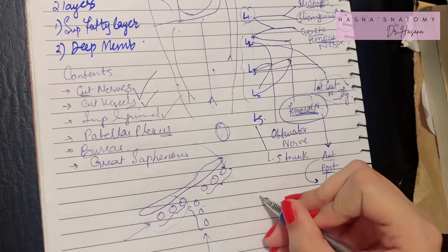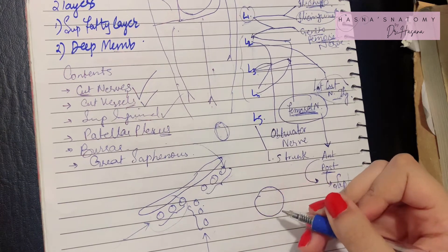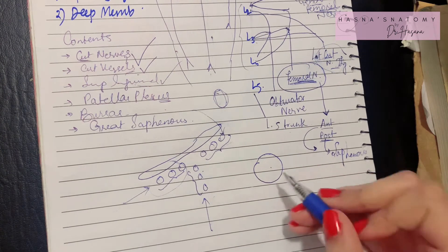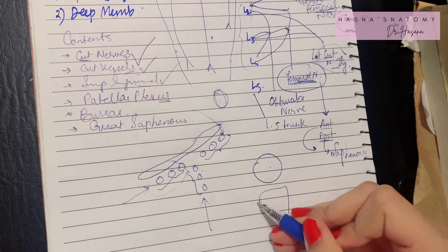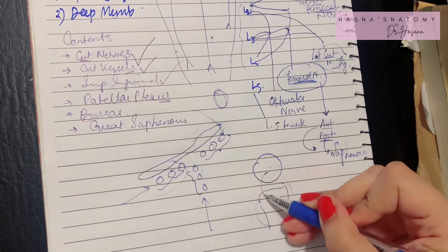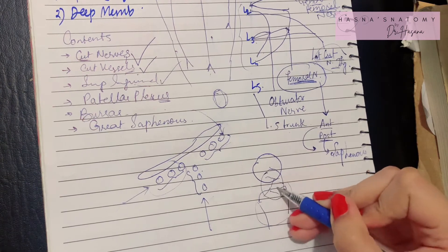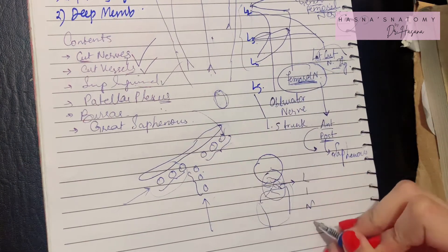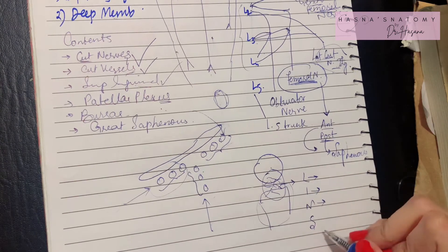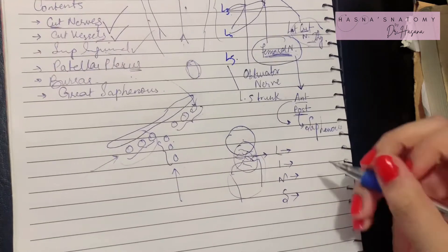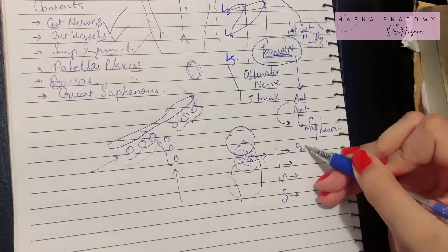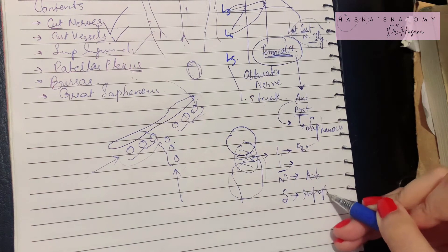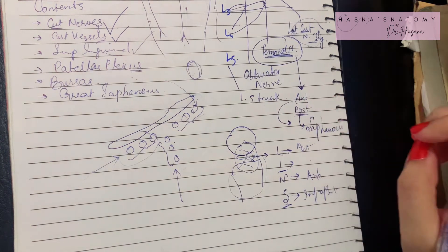The patellar plexus is a plexus of nerves lying in front of the patella — the bone of your knee joint — and on the upper surface of the tibia. The nerves forming the patellar plexus are: the lateral cutaneous nerve, the intermediate cutaneous nerve, the medial cutaneous nerve, and the saphenous nerve — specifically the anterior division of the intermediate cutaneous nerve, the anterior division of the medial cutaneous nerve, and the infrapatellar division of the saphenous nerve, which comes from the posterior division of the femoral nerve.